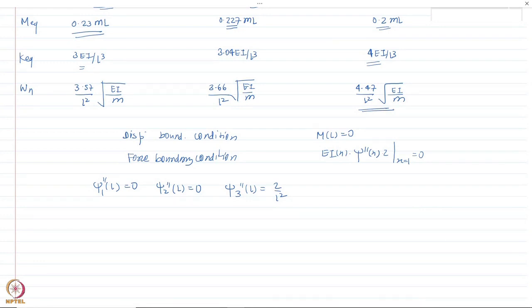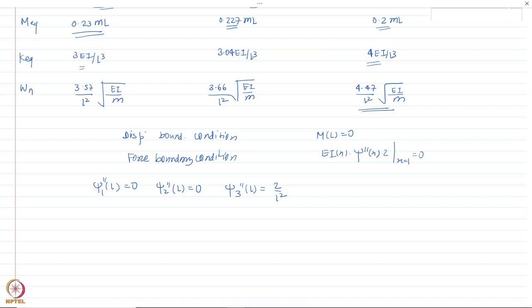Shape function selection is critical to accuracy. As long as the displacement boundary condition is satisfied, results are generally reasonable. If the force boundary condition is also satisfied, the results will be very close to the actual solution. With that, we conclude today's lecture. In the next lecture we will further study how to apply this method to get the response of a continuous system in terms of internal forces and moments.